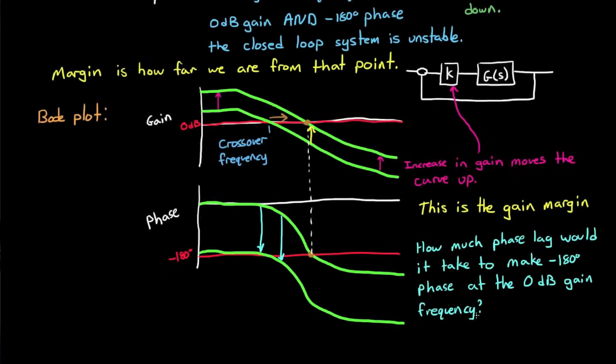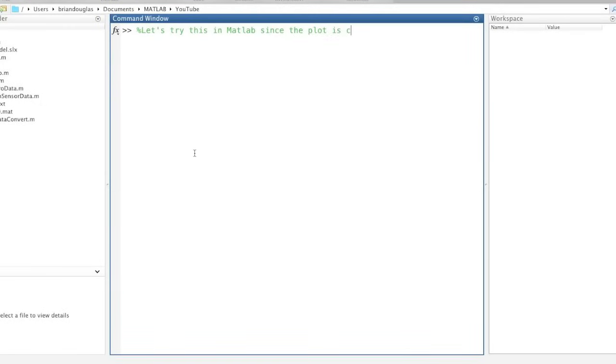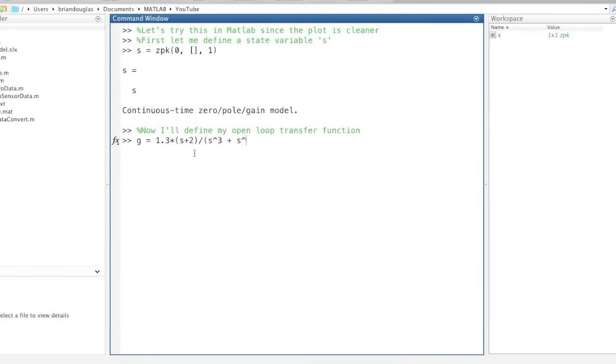We can also pull these numbers very easily from MATLAB. Let me show you. First let me define a state variable s. It just makes it a little bit easier to define transfer functions later on. And now I'll define my open loop transfer function g. And finally we can use the Bode function to plot it.